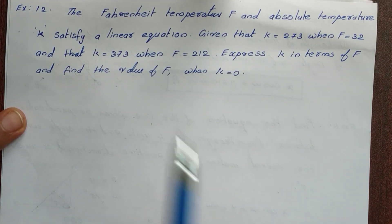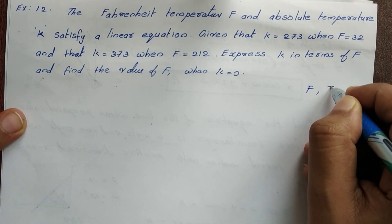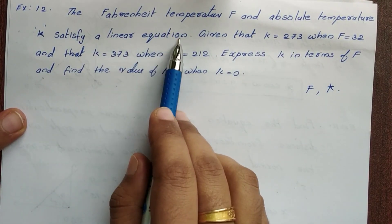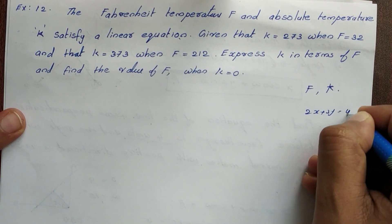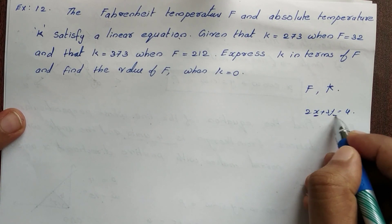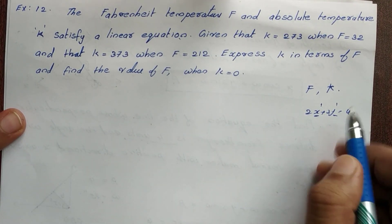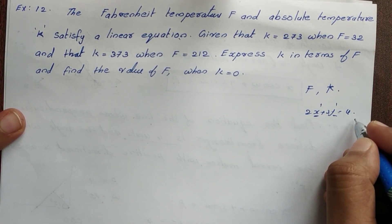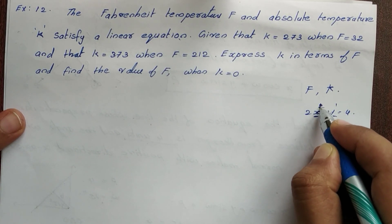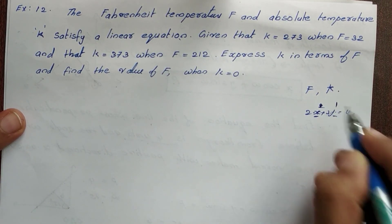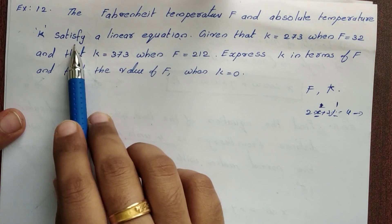Next, Example 12. The Fahrenheit temperature F and absolute temperature K satisfy a linear equation. A linear equation means the highest power of the variable is 1, such as 2x plus 3y equals 4. Straight line equations are linear equations. So F and K satisfy a linear equation.